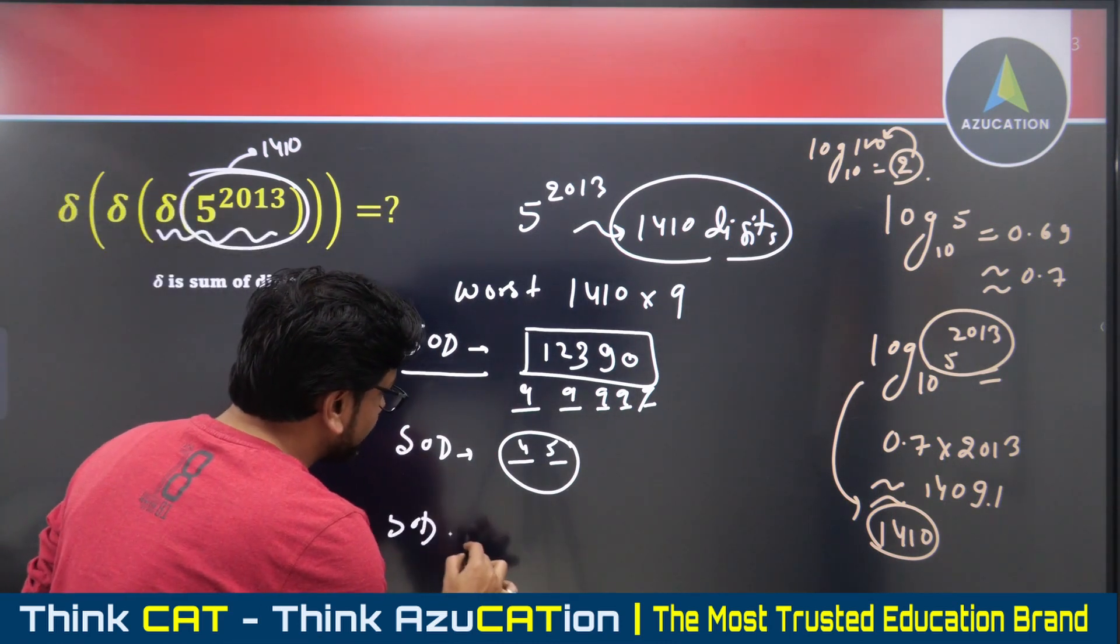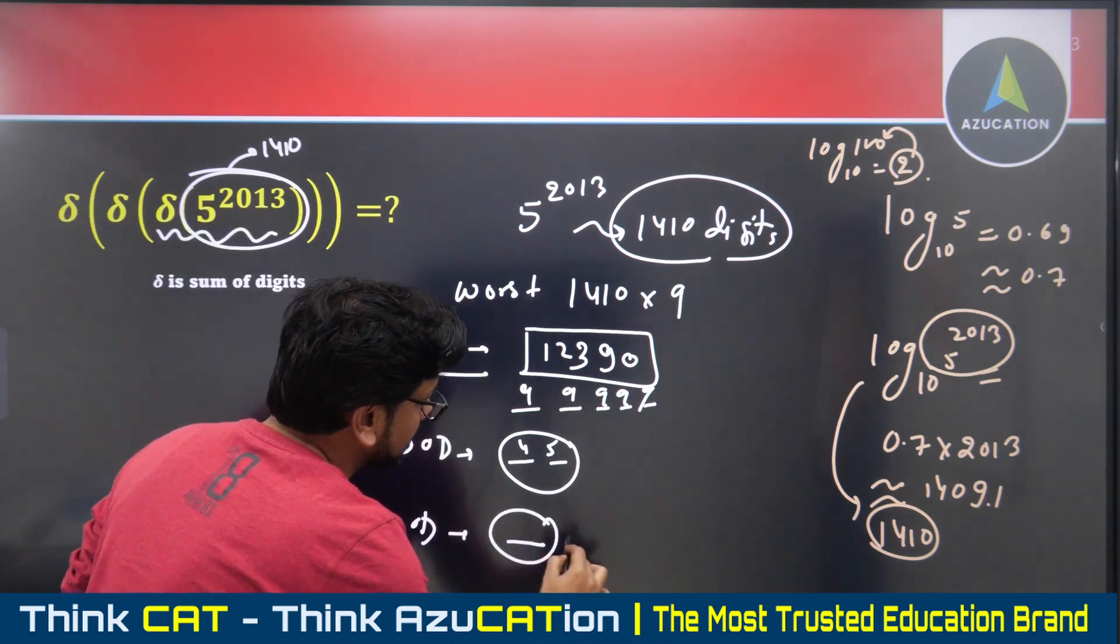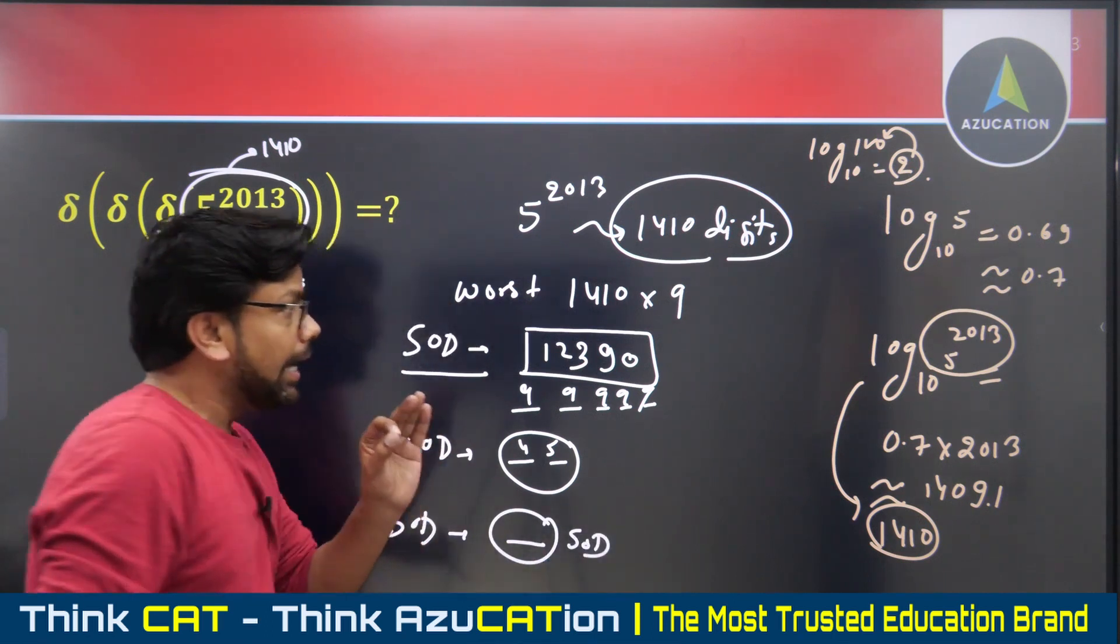If I find the third summation of digits, I am going to have a single-digit number. Is it okay?